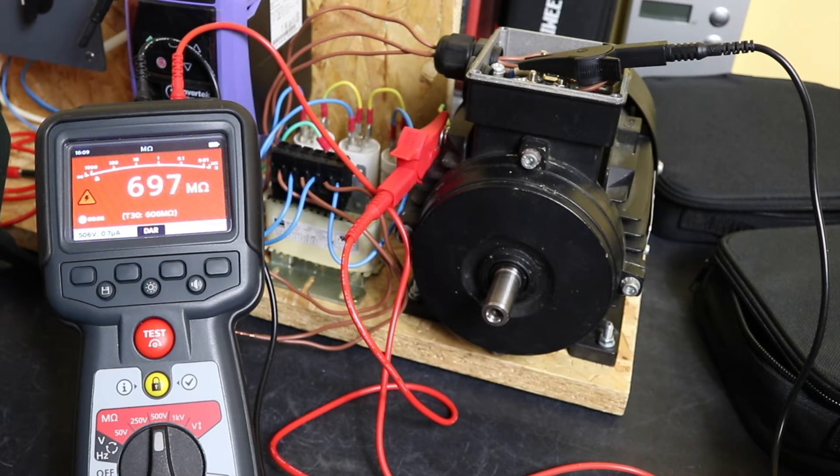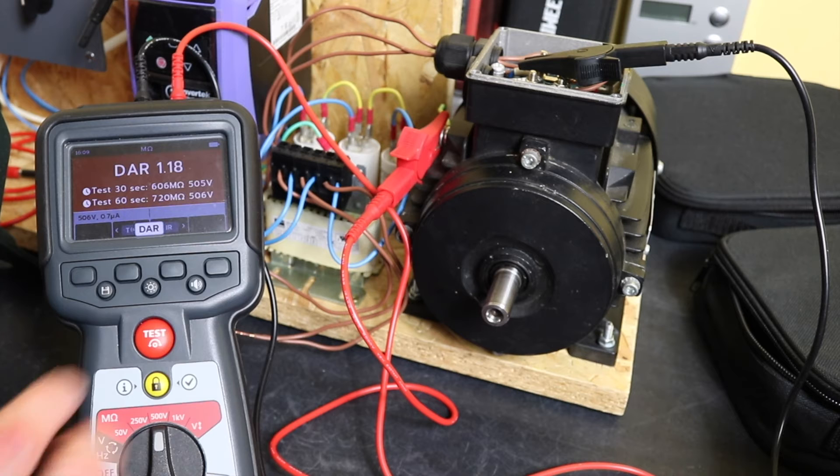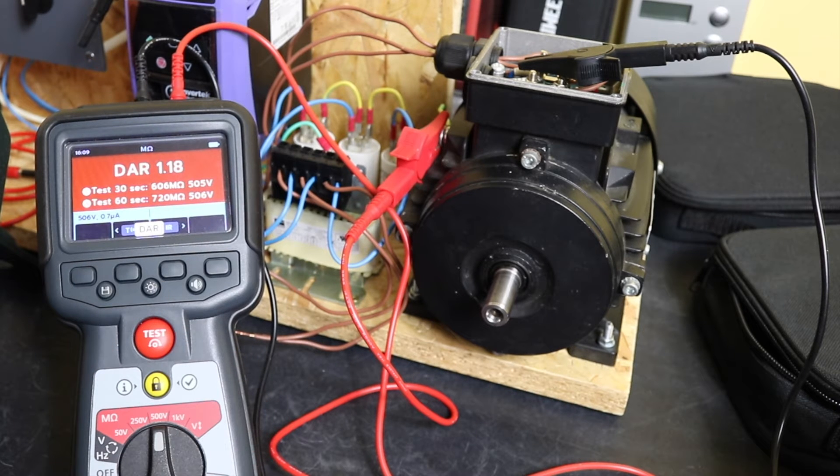Coming to the end of the test with the MTR105, and we are at 700-ish megaohms. It was 1.77 gigaohms, so 720 megaohms. Our DAR is 1.18, which is equivalent to the UT505B, but you can see significant difference between the readings there for the megaohms.